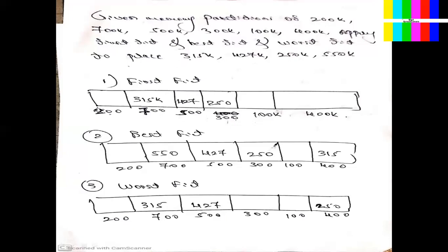According to First Fit for 315K: first block is 200K — cannot hold 315K. Second block is 700K — 700 is capable, so allocate 315 here. Next request 427K: 500K block is available — 427 fits, allocate here. Next 250K: 300K block available — allocate here. Next 550K: 100K block — cannot. 400K block — cannot. No more blocks available. So First Fit satisfies 315, 427, and 250 but cannot satisfy 550.